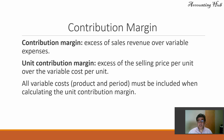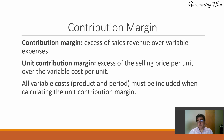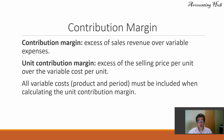Variable expenses combine variable costs plus variable operating expenses. The unit contribution margin is the contribution margin divided by units sold, or the excess of the selling price per unit over the variable cost per unit. All variable costs must be included when calculating both the unit contribution margin and the total contribution margin.